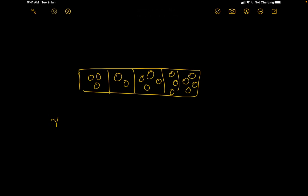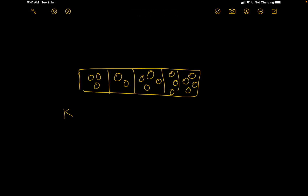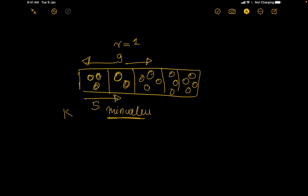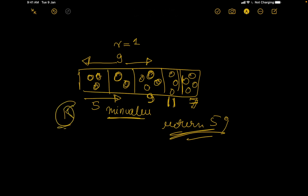We can add k more power plants. If r equals 1, we compute each city's total connected power stations. For example, one city might have values 9, 3, 5, 9, 7 and so on. The city with the minimum value here is 5. We want to add k power stations to maximize this minimum value.